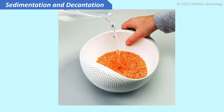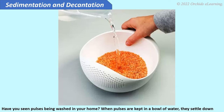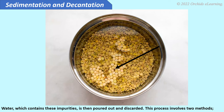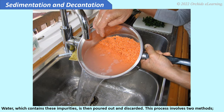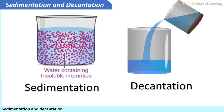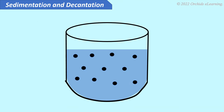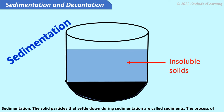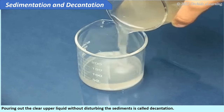Sedimentation and decantation. Have you seen pulses being washed at home? When pulses are kept in a bowl of water, they settle down as they are heavy. However, dirt, insects, tiny pieces of straw, and other lighter impurities float at the top. The water containing these impurities is then poured out and discarded. This process involves two methods: sedimentation and decantation. The process of separating insoluble solids suspended in a liquid by allowing them to settle down is called sedimentation. The solid particles that settle down are called sediments. The process of pouring out the clear upper liquid without disturbing the sediments is called decantation.